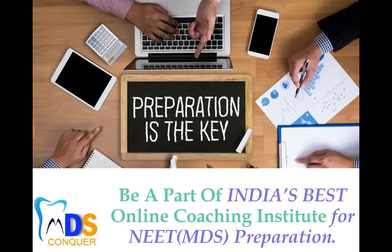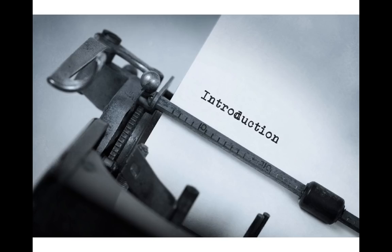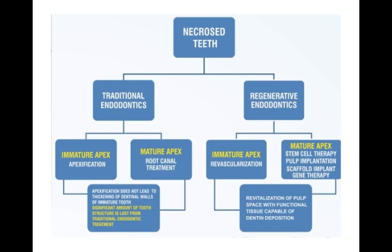Going into detail — what is the treatment plan for necrotic teeth? Traditional endodontics is based on whether the apex is mature or immature. For example, if the tooth is immature and necrotic, there is no chance for apexogenesis to take place, so the treatment plan is apexification. For a mature apex, you can go for regular root canal treatment.